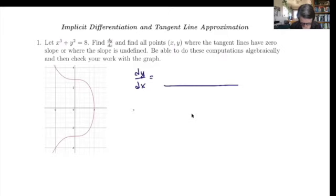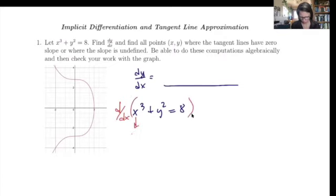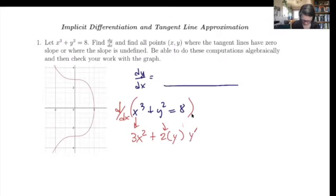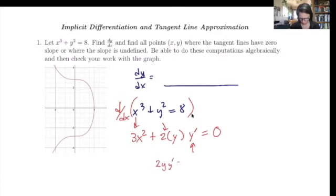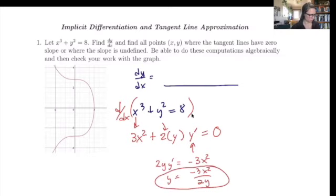If we look at x cubed plus y squared equals 8, we're going to take the derivative of the whole thing with respect to x. The x cubed part is straightforward. For y squared, think of it as stuff squared: do 2 times stuff, copy down stuff, multiply by stuff prime. The derivative of 8 is zero. So we need to solve for y prime — we'll have 2y · y prime equals negative 3x squared, so y prime equals negative 3x squared over 2y.